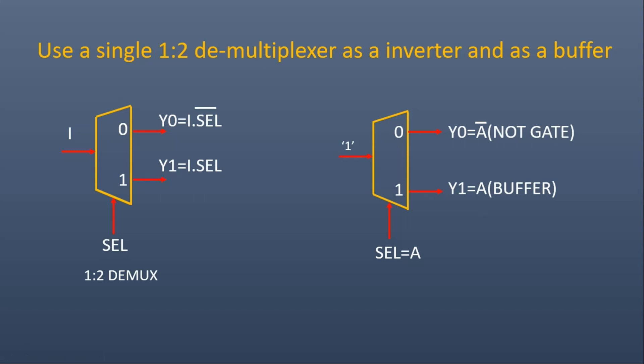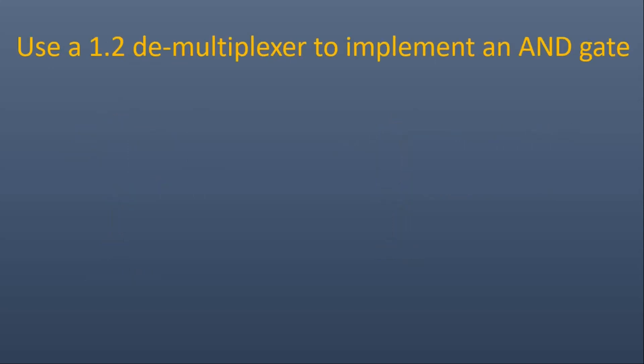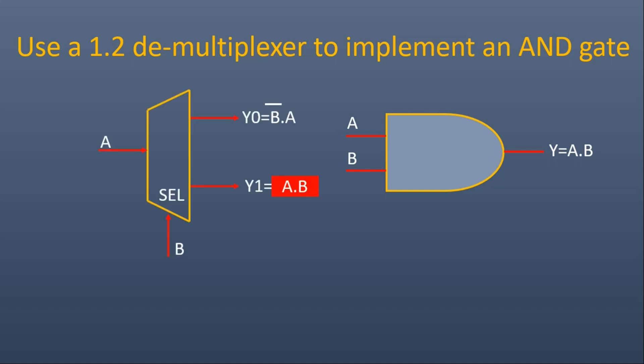Now let us move to the next question. The question is on your screen where you have to use a 1×2 demultiplexer to implement an AND gate. Those who know its answer please write it down in the comment section, otherwise I am going to tell you its answer. This is an AND gate where A and B are two inputs and output y is equal to A AND B. This is how we implement an AND gate with the help of a 1×2 demultiplexer.